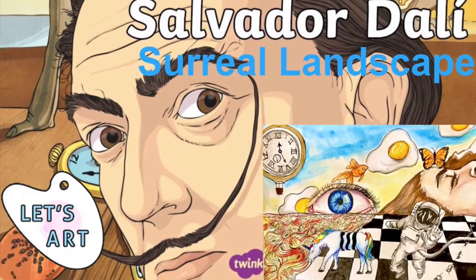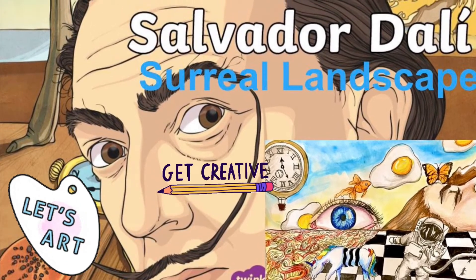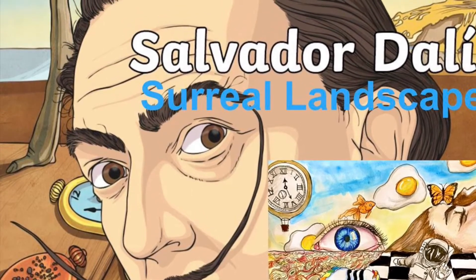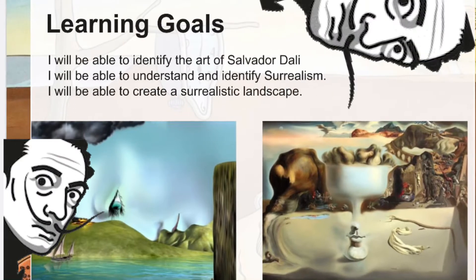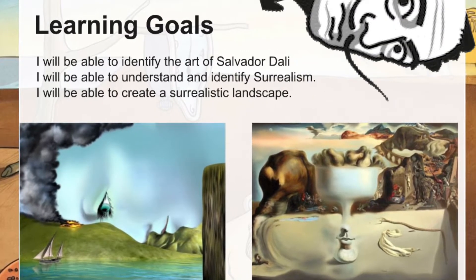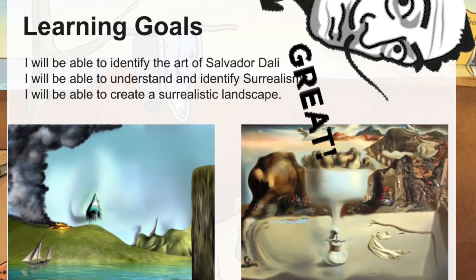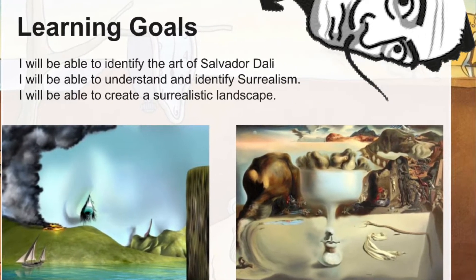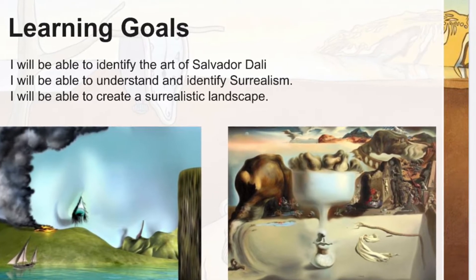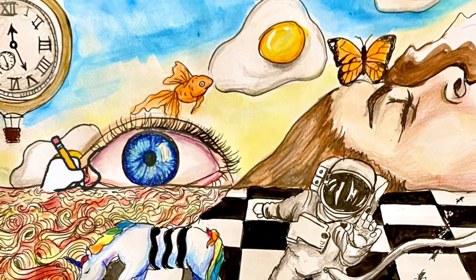One of my favorite types of art to study is surrealism, and today we get to learn about not only surrealism but one of my favorite artists, Salvador Dali. Our goal for this art lesson is not only to learn about and identify the art of Salvador Dali and surrealism, but we are also going to learn how to create our own surrealistic landscape.